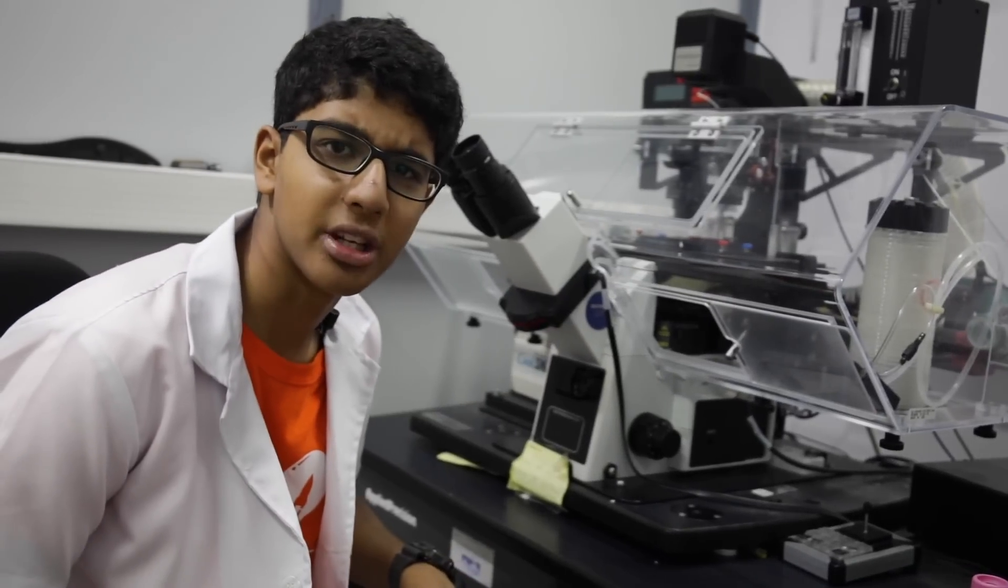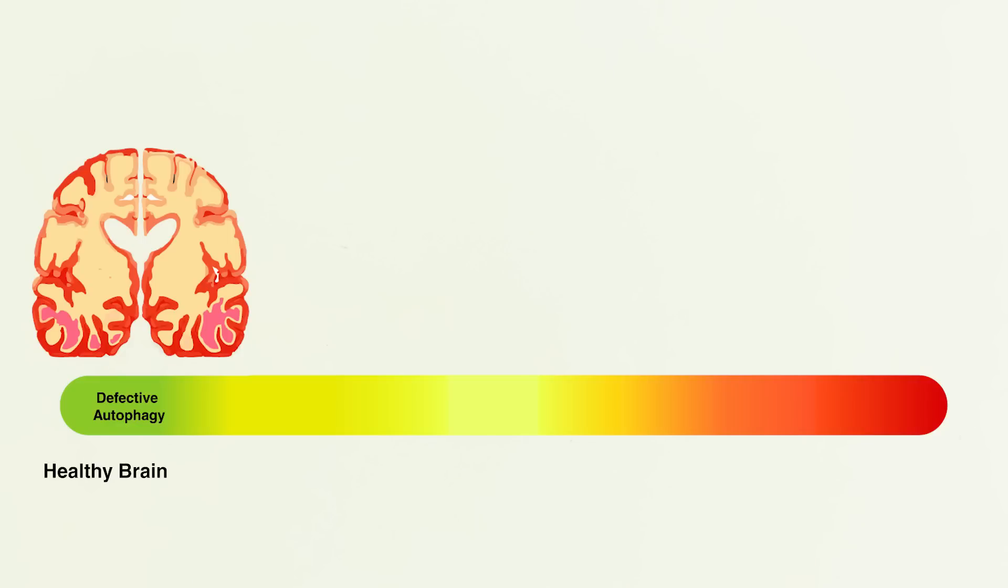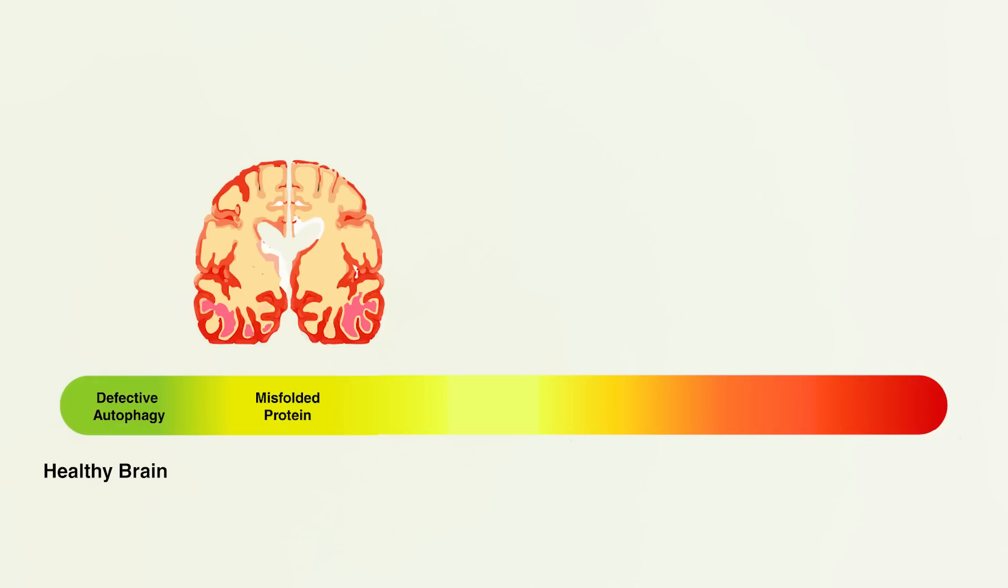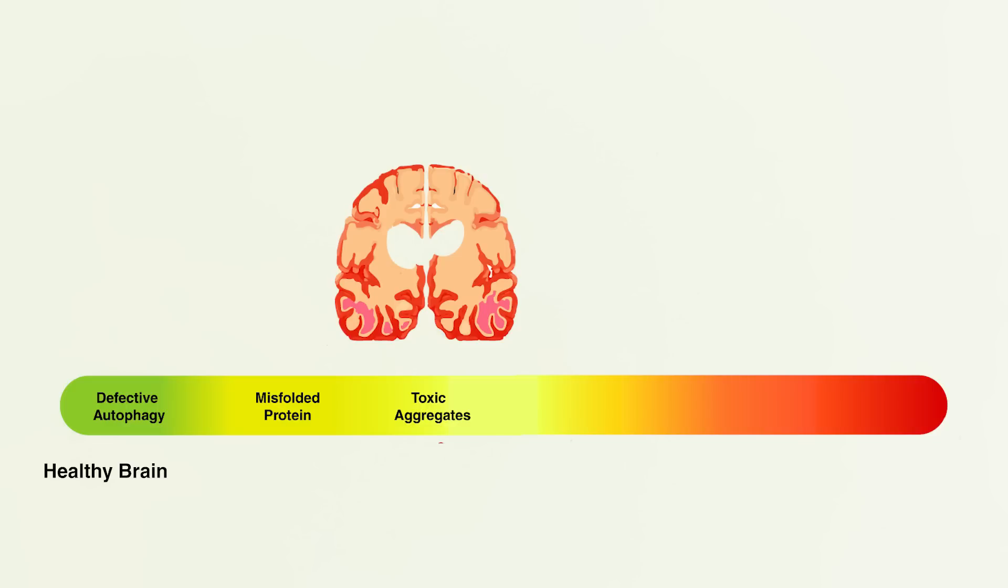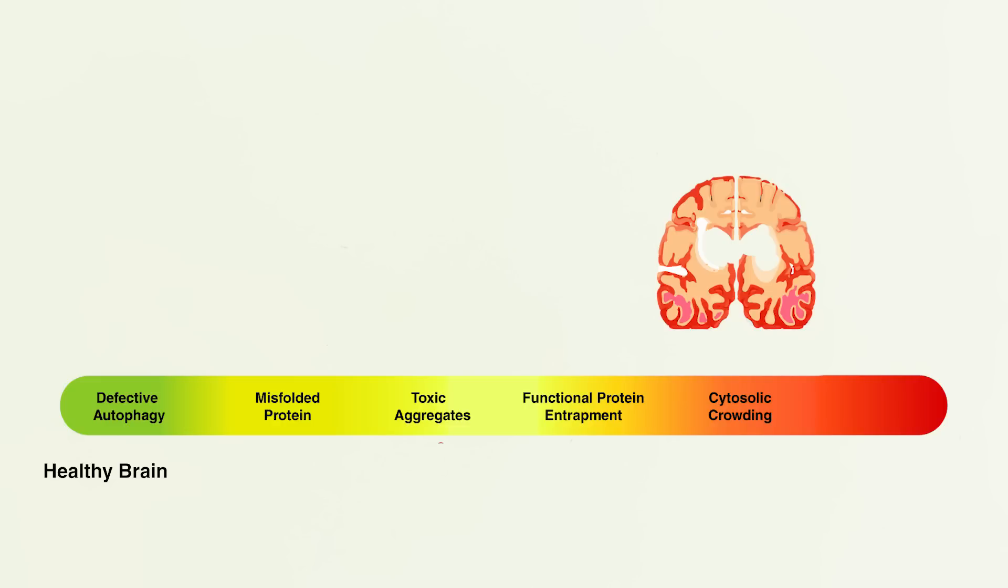Let's understand the connection between autophagy and Alzheimer's. In our brain, a defective autophagy leads to accumulation of misfolded protein. This causes toxic aggregates to form. They trap functional proteins, ultimately leading to cytosolic crowding.